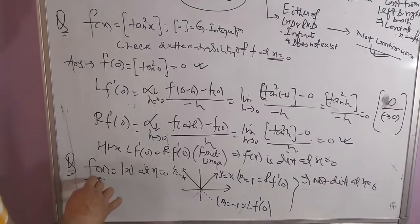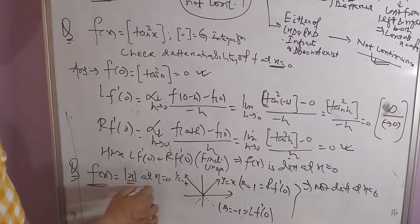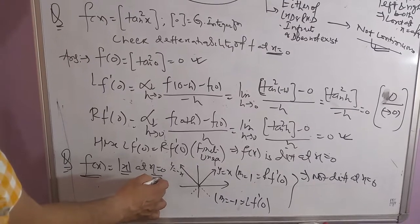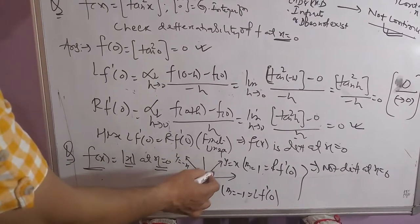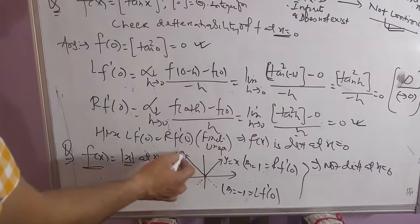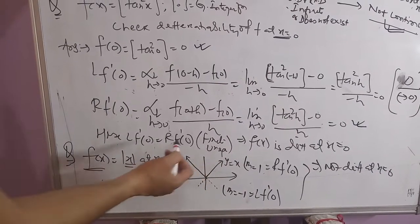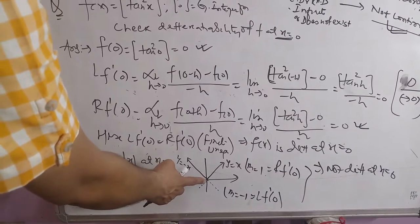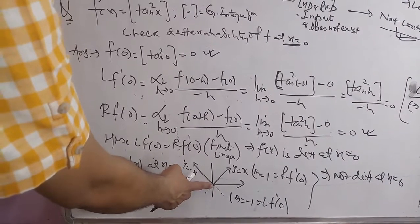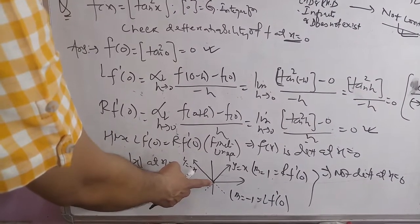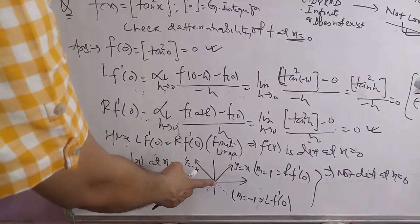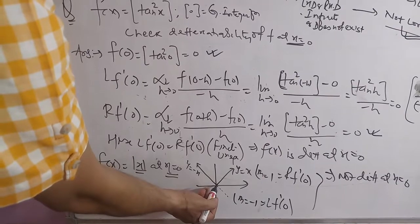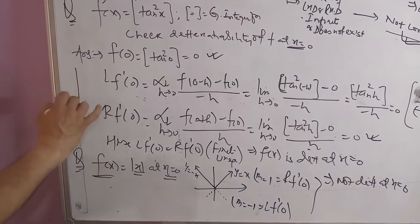One more basic question: f(x) equal to mod x. Check differentiability at x equal to 0. We draw the graph of mod x. From the geometrical meaning of differentiability, if there is a corner point at any point, the function will be non-differentiable at that point.